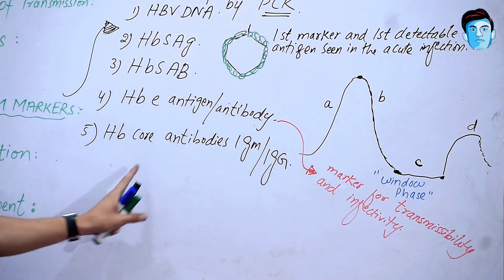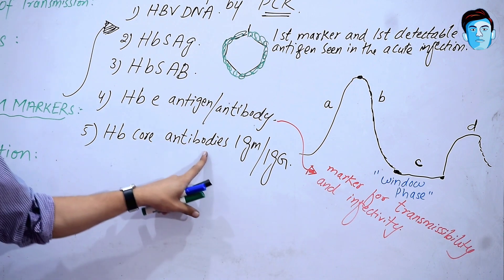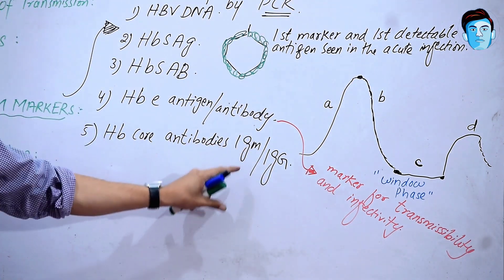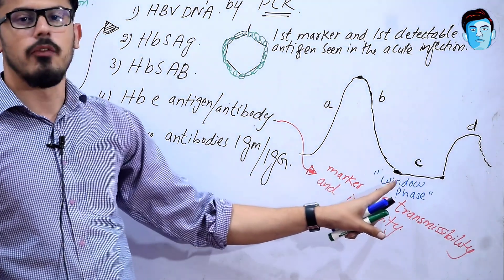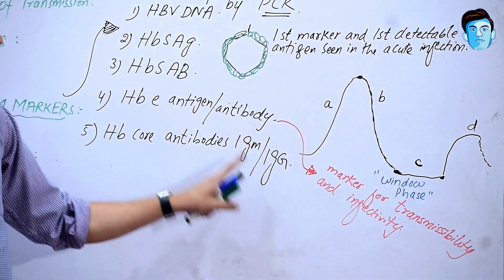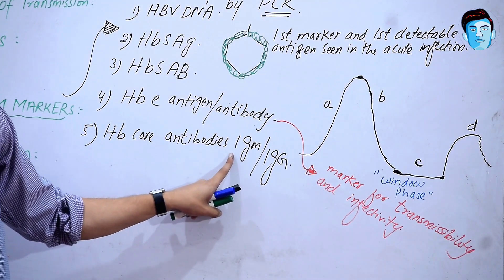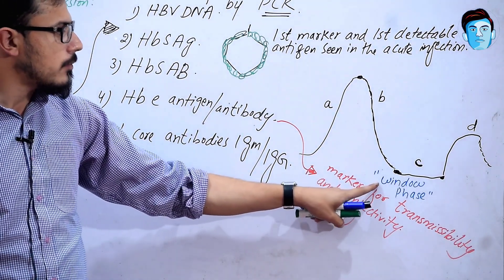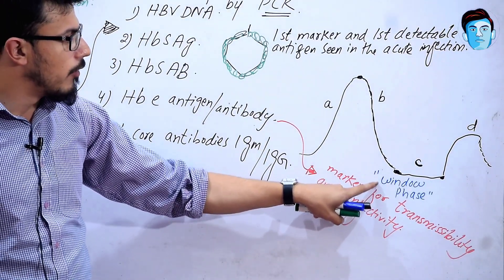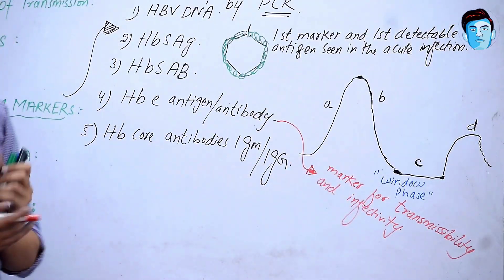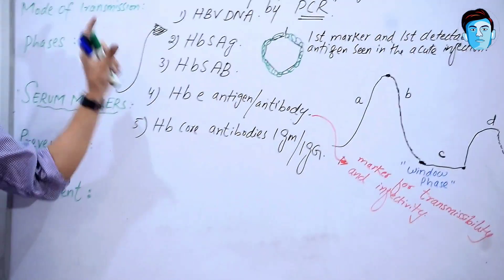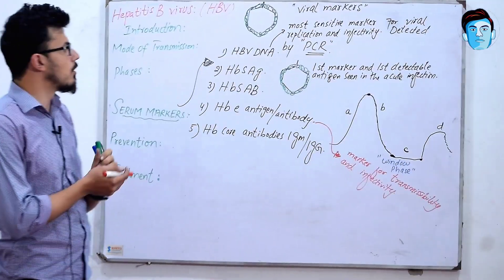Lastly, we have Hepatitis B core antibodies in the form of IgM and IgG. These play a very important role in the window phase. If the infection is acute during the window phase, IgM has a major role. If the infection is chronic during the window phase, IgG will be active. Those are all the serum markers — they are very important serum markers for the Hepatitis B virus.